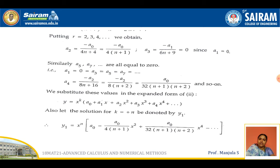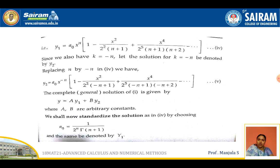We find all constant values in terms of a0. Since a1 = 0, we get a1 = a3 = a5 = a7 = 0. We substitute all values into equation number 2, y = x^k (a0 + a1 x + a2 x² + ...), and after substitution and simplification, replacing k = n, we get y1 = x^n [a0 − a0/(4(n+1)) x² + ...].